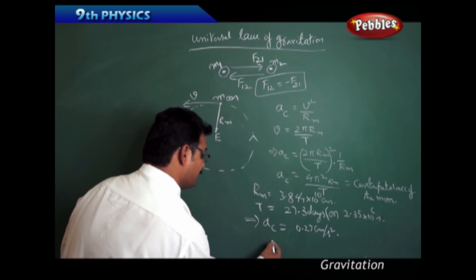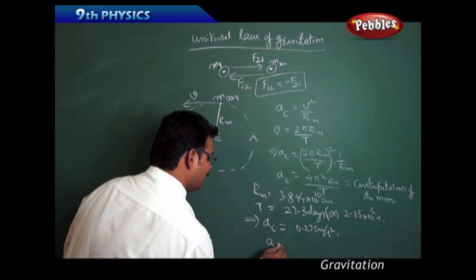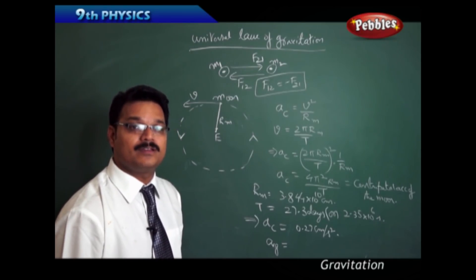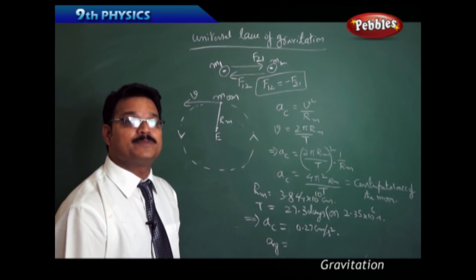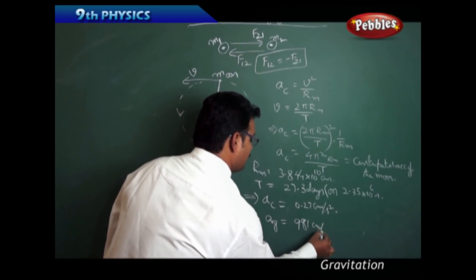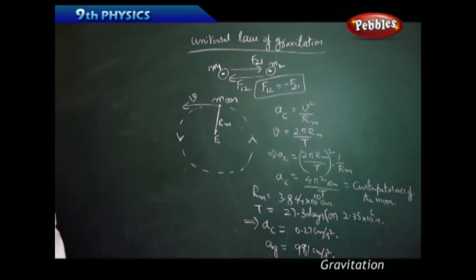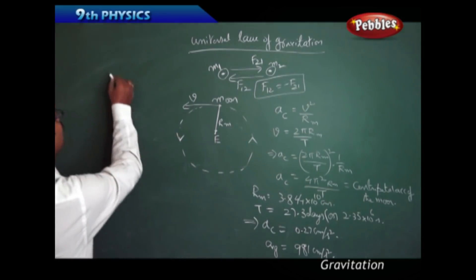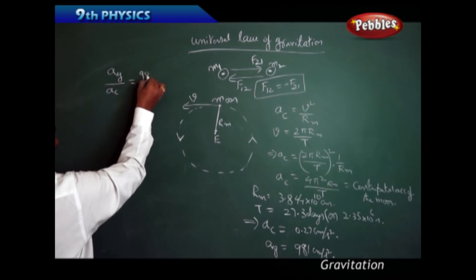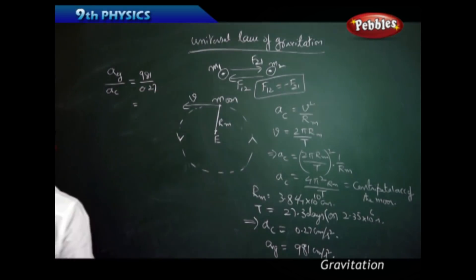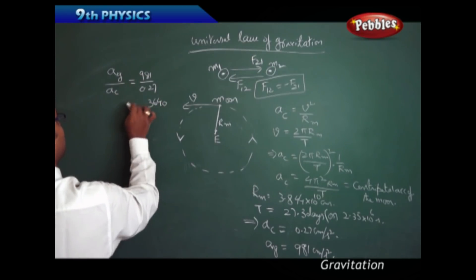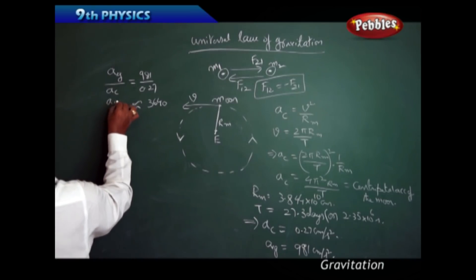Next, we know that acceleration due to gravity, a_g — the symbol is g — and the value we know from previous classes is 9.8 m/s² or 980 cm/s². Taking 981 cm/s², now compute the ratio of acceleration due to gravity to the centripetal acceleration of the moon: a_g / a_c = 981 / 0.27 ≈ 3640.